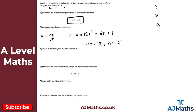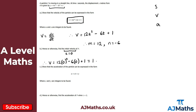Part b is a hence or otherwise, so we're going to use our solution to part a. As soon as we see the phrase initial velocity, remember we're looking at t equals 0. So all I need to do is substitute t equals 0 into the velocity: v equals 12 times 0 squared minus 6 times 0 plus 1, which gives 1. So the initial velocity is 1 meter per second. That's our solution to part b.